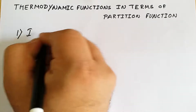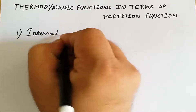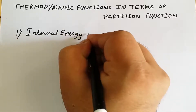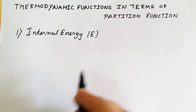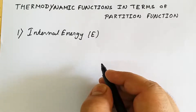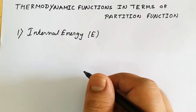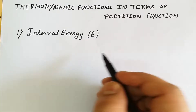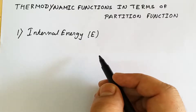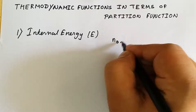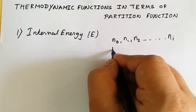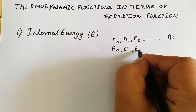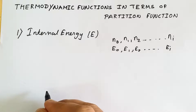The first thermodynamic function we are looking at is internal energy, represented by E. To represent internal energy in terms of partition function, we consider N number of molecules distributed amongst several energy levels — as discussed in Maxwell-Boltzmann distribution law — with different numbers of particles n₀, n₁, n₂, up to nᵢ, distributed across energy levels e₀, e₁, e₂ up to eᵢ.